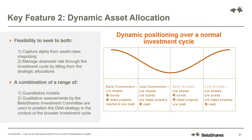Key feature two is dynamic asset allocation — the active management on our part to either generate additional alpha at the asset class level or manage downside risk. Asset classes can deviate from their fair values. If you do nothing, you believe in SAA only. We believe we can add value or manage risk, so we take moderate tilts. We focus on the three or four key DAA decisions as per that summary table, and that table forms the centrepiece of our reporting and accompanying videos.